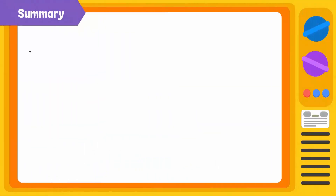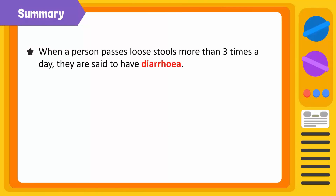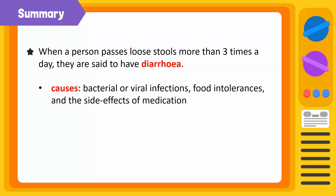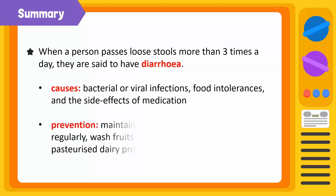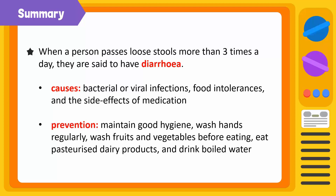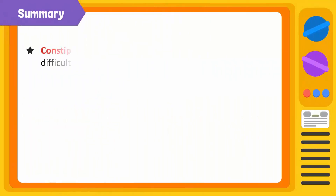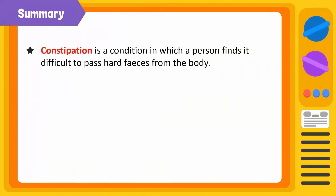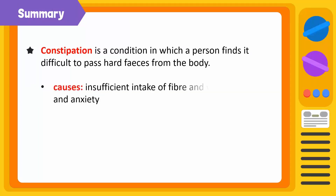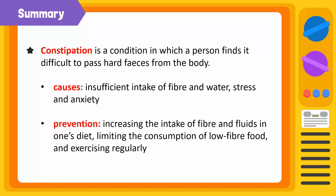Let's summarize. When a person passes loose stools more than three times a day, they are said to have diarrhea. Diarrhea is caused by bacterial or viral infections, food intolerances, and the side effects of medication. We can prevent diarrhea with good hygiene — wash hands regularly and wash fruits and vegetables before eating them. You should also eat pasteurized dairy products and drink boiled water. Constipation is a condition in which a person finds it difficult to pass hard feces out of the body. Constipation is caused by insufficient intake of fiber and water and can also result from stress and anxiety. We can prevent constipation by increasing the intake of fiber and fluids, limiting low-fiber food, and regularly exercising.